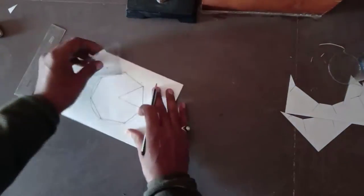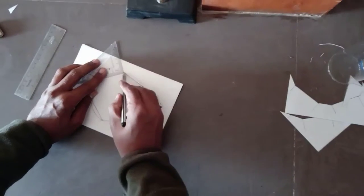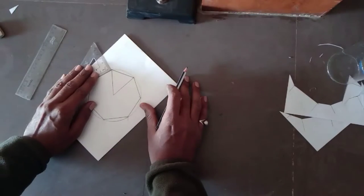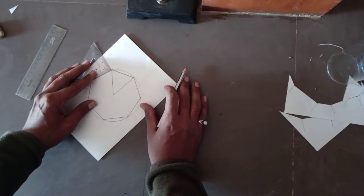Now make perpendicular lines at both the ends of all the 7 sides of this heptagon.